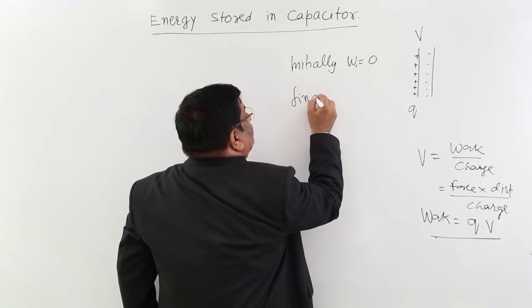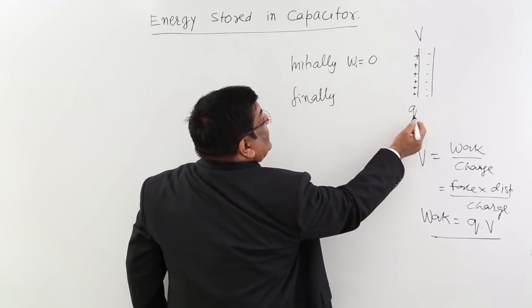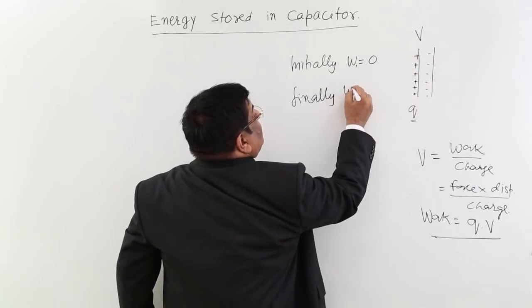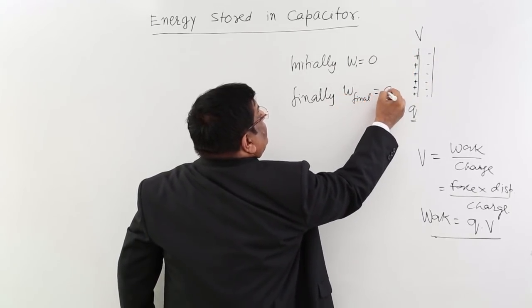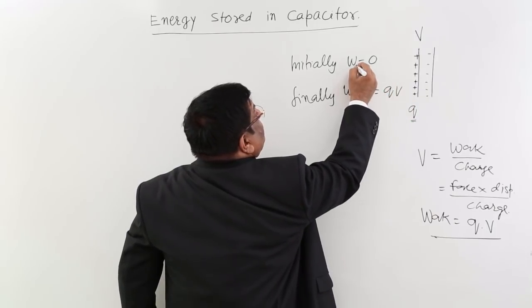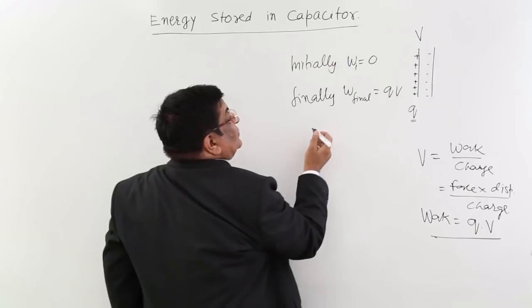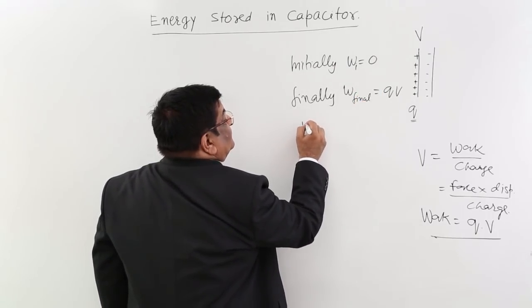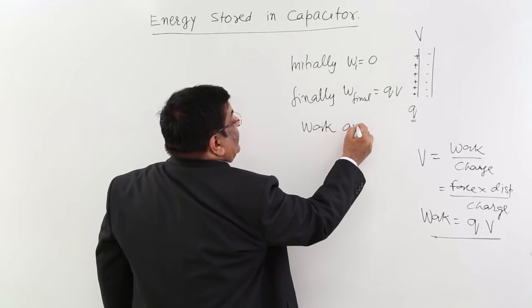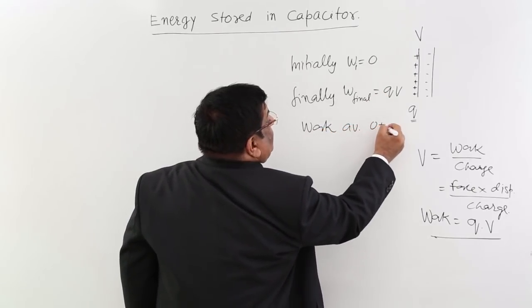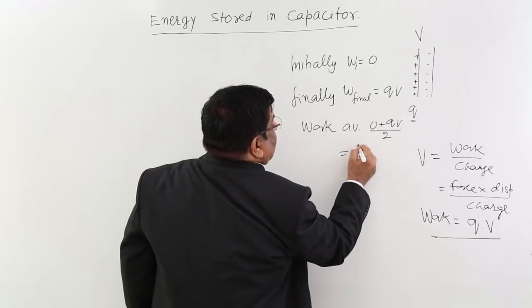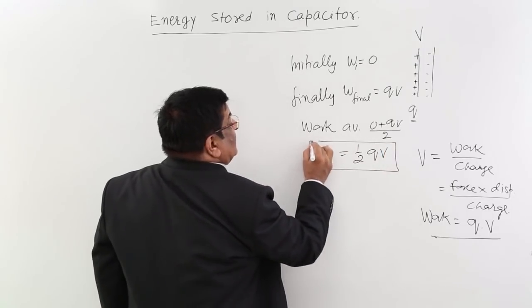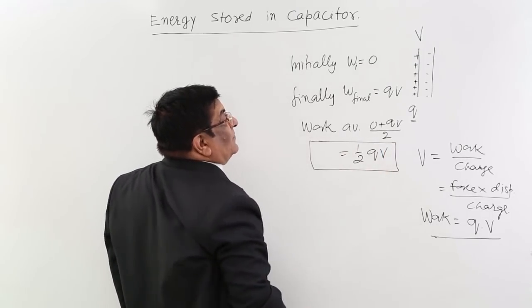Finally, when I put the last of this charge Q, the potential had gone to V. How much work I had to do? Q into V. This is initial, this is final. So what is the average work done? Work average. This is 0 plus QV upon 2, this is half QV.